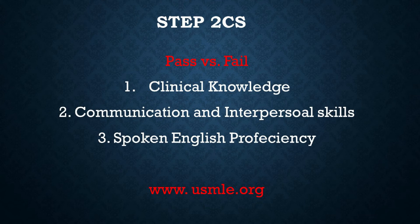On the CS, you are scored on three parameters: clinical knowledge, communication and interpersonal skills, and spoken English proficiency. You must pass each parameter in order to pass the whole exam. Detailed information can be found on the official USMLE site at www.usmle.org.